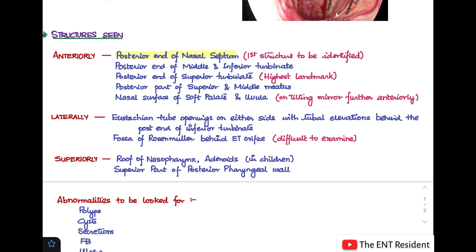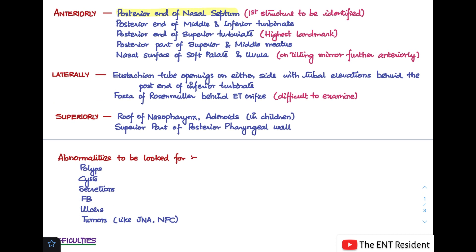After the anterior structures, you move on to the lateral structures. Laterally, you will notice the Eustachian tube openings on either side with tubal elevations, behind the posterior end of the inferior turbinate. Just behind the Eustachian tube orifice you will also see the fossa of Rosenmuller, which is slightly more difficult to examine. Superiorly, you will note the roof of the nasopharynx, and in children you will find adenoids at the junction of the roof and posterior wall of the nasopharynx, along with the superior part of the posterior pharyngeal wall.